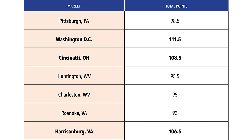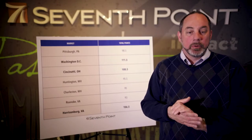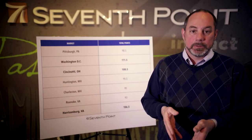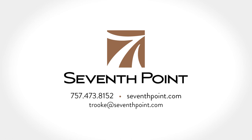The markets that have the highest point value become the markets that you'll want to advertise in because they'll be the most effective, whereas the markets with lower point values, such as Roanoke and Charleston, will be the markets you want to avoid because they'll be the least effective. We understand that this is a lot to take in, but we also believe that math and data is what's going to guide you through today's marketing challenges. For more information on how we can develop a specific GeoMarket Selection Tool just for you, call us or visit our website at 7thpoint.com.